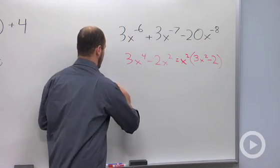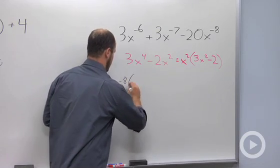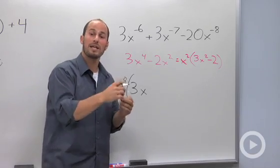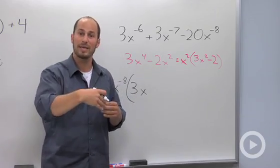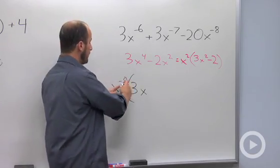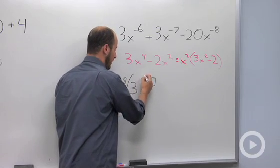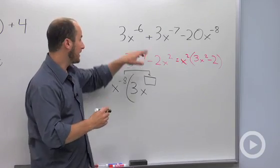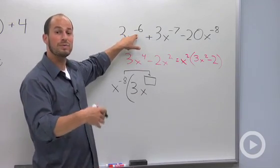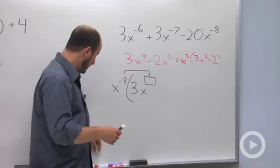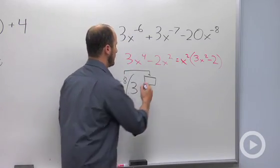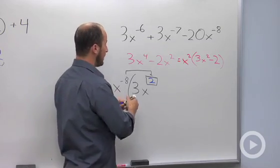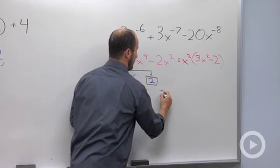So in this case, x to the negative eighth. Take that out, and then we are left with 3x. And then, again, think about when we're multiplying bases, we add our exponents. So we want to figure out what goes here, that when we multiply these things together, we end up with a negative 6. Negative 8 plus what is equal to negative 6? That should be a 2. So then we have the plus 3.